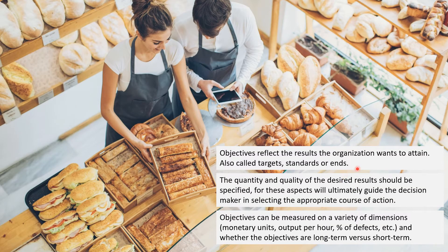The second step is identifying objectives. Objectives reflect the results the organization wants to attain — also called targets, standards, or ends. The quantity and quality of desired results should be specific. When you want to take an opportunity or solve a problem, you have to focus on your organization's objective. For example, if your objective is to make profit, and the government offers a tax reduction for young small-scale businesses, that is a good opportunity to take.